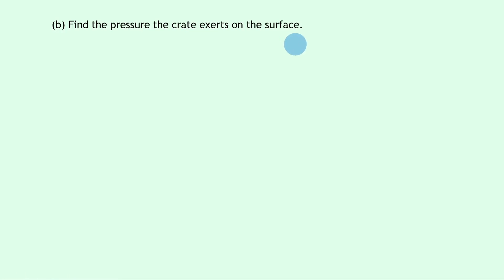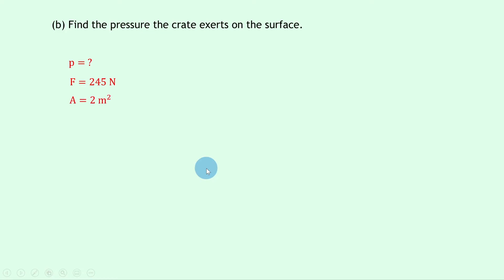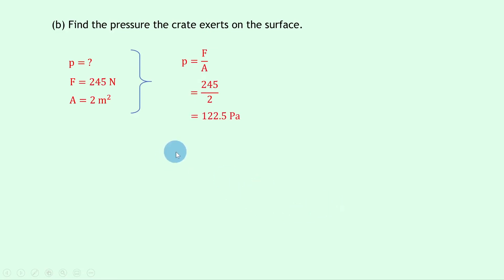Part B then says to find the pressure the crate exerts on the surface. Writing down what we know: we're trying to find the pressure p. The force is 245 newtons from part A and the area was given as 2 meters squared. Writing down our equation p equals f over a, substituting in gives 245 divided by 2, which gives a final answer of 122.5 pascals. You could also say 122.5 newtons per meter squared, as the units of pascals and newtons per meter squared are equivalent.